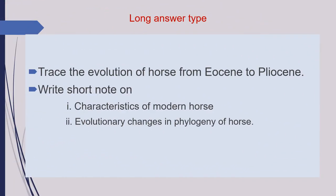The third category of questions are long answer questions. First question is: trace the evolution of horse from Eocene to Pliocene. Question number two is: write short notes on the following — number one, characteristics of modern horse; number two, evolutionary changes in phylogeny of horse. These are explanatory type of questions and must be supported with diagrams, tables, or flowcharts.